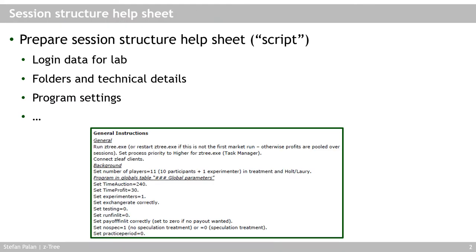I found it very helpful to have a session structure help sheet — what I call my cheat sheet. This is essentially a script or checklist containing all the information I need for running my experiment, including login data for the lab, folders and technical details, program settings, and also what to bring to the lab like pens and receipts that participants have to sign. I structure it by when I need to take care of each item: what to bring, what to do before, during, and after the experiment.